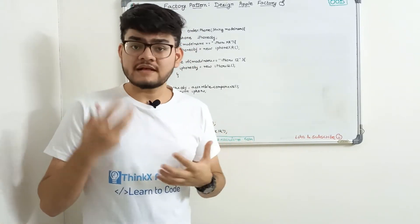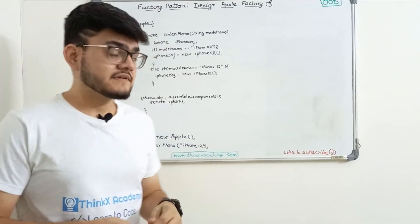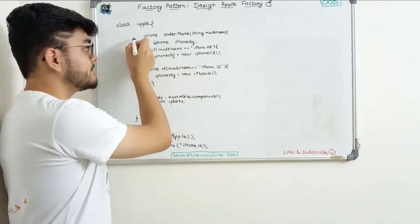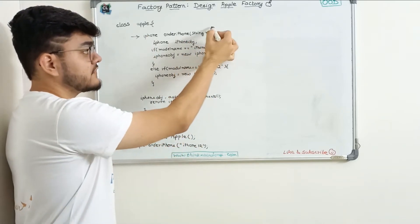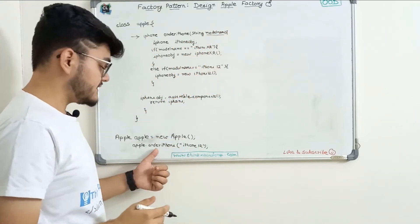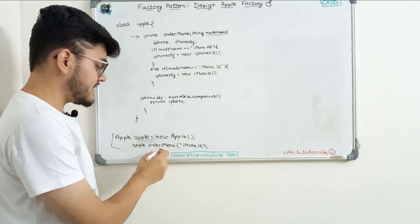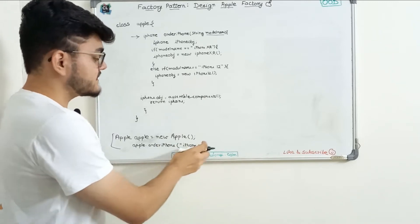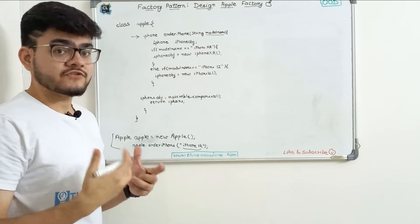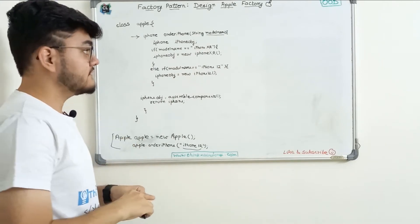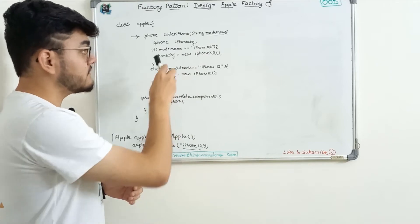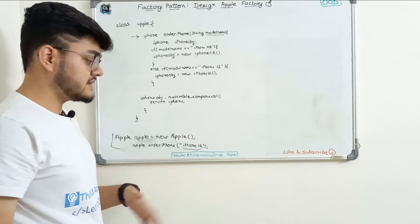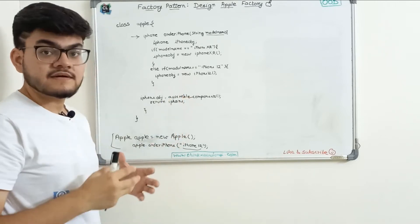The very naive, first approach as a developer is to simply create a class Apple. This Apple class has a function called orderIPhone, which takes the model name. So I'll give in the model name to the object — you can see I've created an object of the Apple class, calling orderIPhone and ordering an iPhone 12. This orderIPhone function will create the iPhone 12, specifying all the steps to create it, and then return the iPhone object — our desired iPhone.